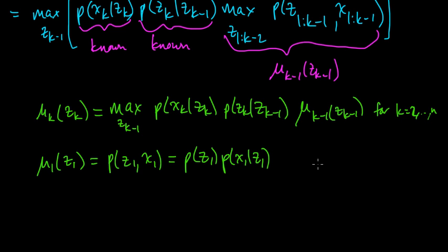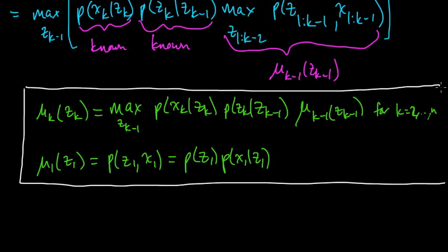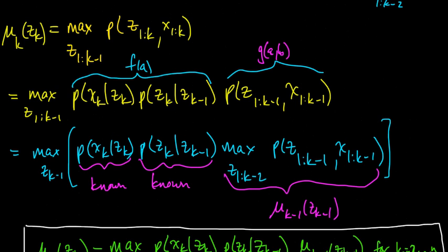We now have a recursion we can use to compute mu, starting from mu_1 and then doing mu_2, mu_3, mu_4 — going in order, in the forward direction, all the way up to mu_n.